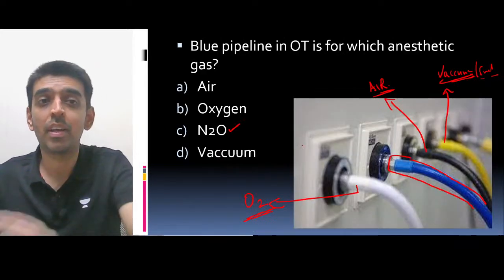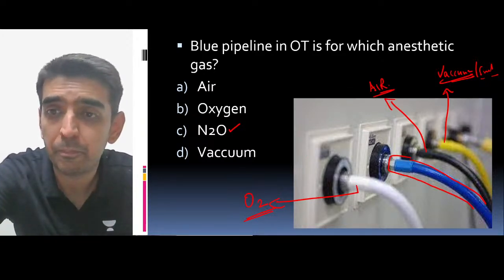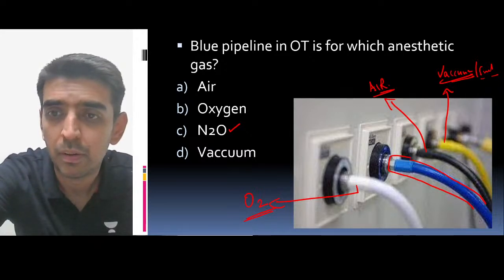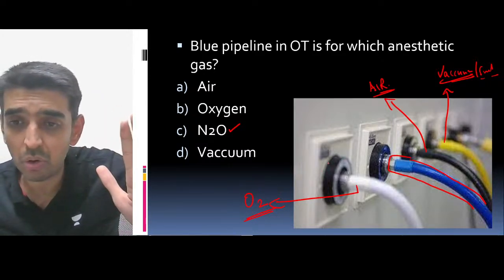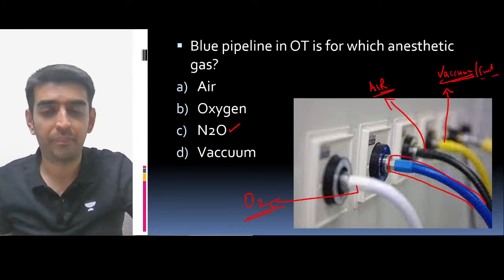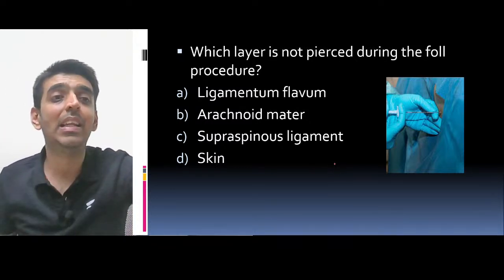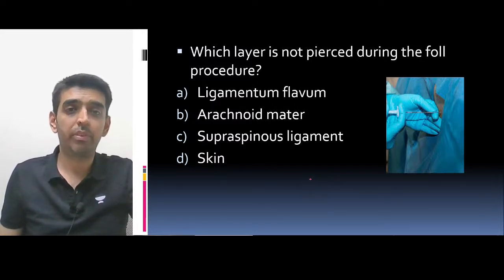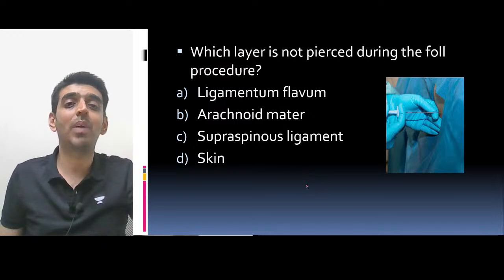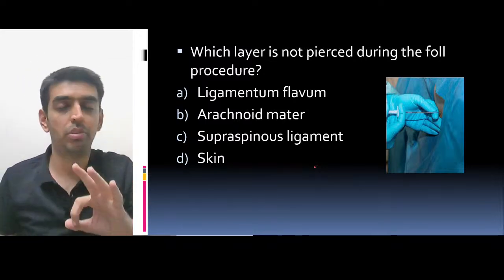Moving on to the next question. On your screen: which layer is NOT pierced during the following procedure? Options are: ligamentum flavum, arachnoid mater, supraspinous ligament, or skin. First, identify which procedure is being performed by looking at the needle and technique, then determine which layer is not pierced.